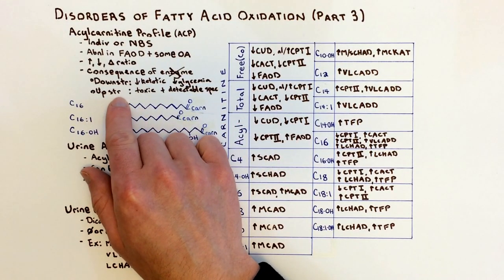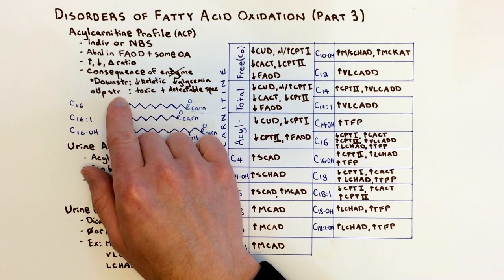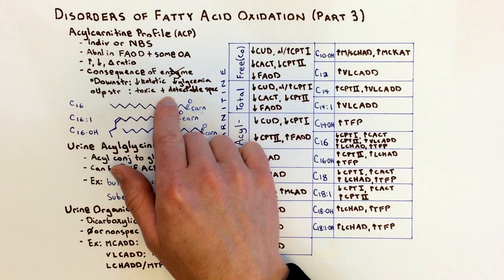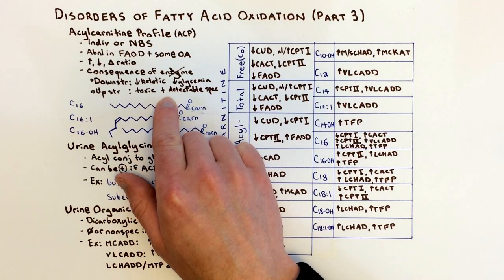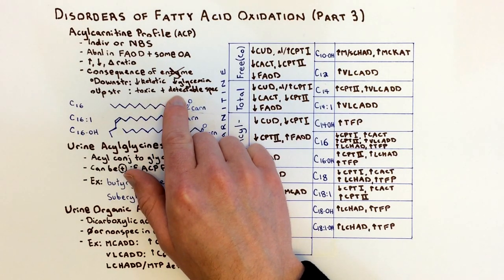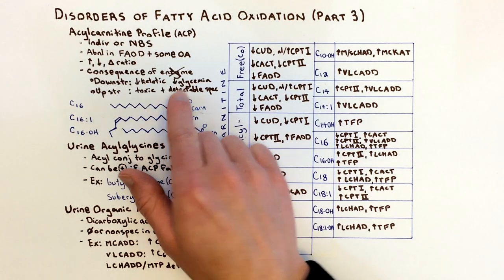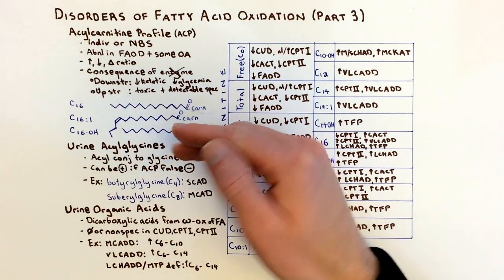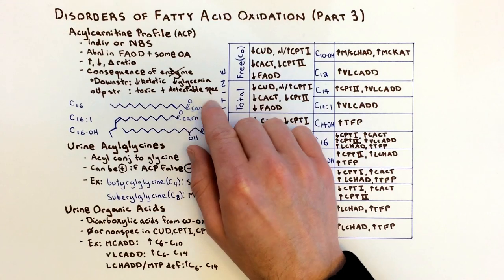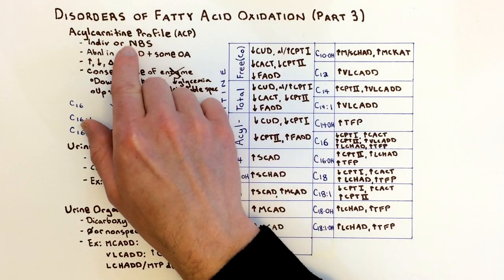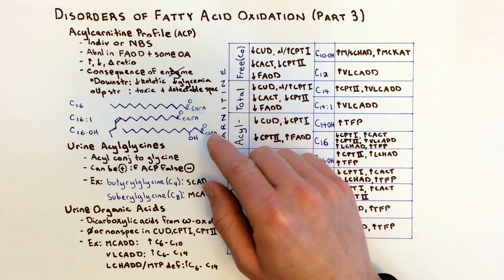Upstream, you can get some toxic compounds — for example, long-chain fatty acids in VLCAD deficiency build up and affect the heart, leading to cardiomyopathy. And if any species is increased on account of being upstream of the enzyme block, you can get detectable species identifiable via the acylcarnitine profile.